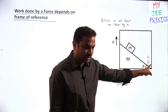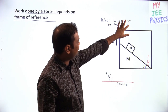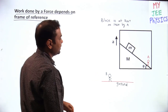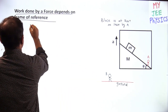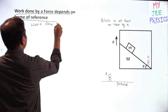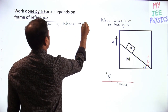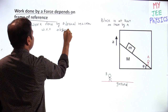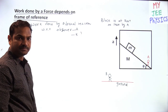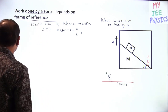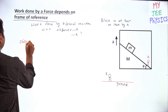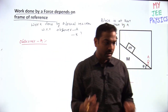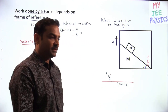As seen by observer A, the block is at rest — the block is not sliding. The question is: what is the work done by the normal reaction with respect to observer A, and also with respect to observer B? With respect to observer A, the block is at rest.